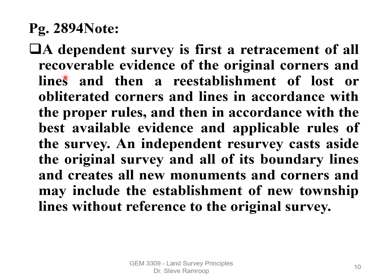A dependent survey, page 289, is first a retracement of all recoverable evidence of the original corners and lines, and then re-establishment of lost or obliterated corners and lines in accordance with the best available evidence and applicable rules of the survey — that survey is actually dependent upon previous surveys. An independent survey casts aside the original survey, does not use the original survey, creates all new monuments and corners, and may include the establishment of a new township line without reference to the original survey.